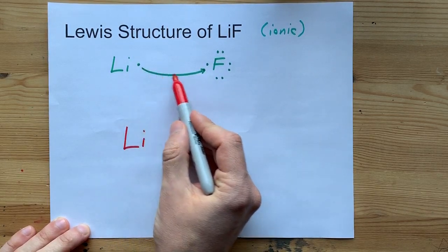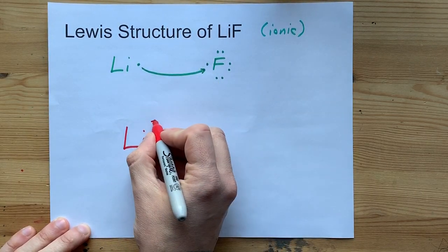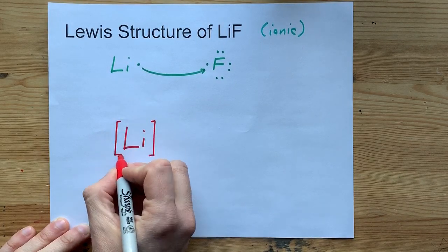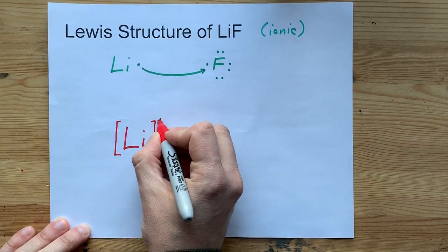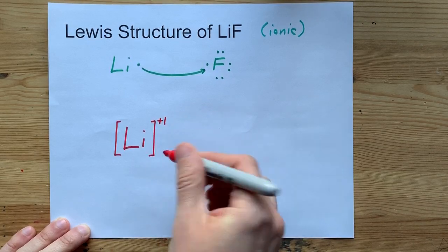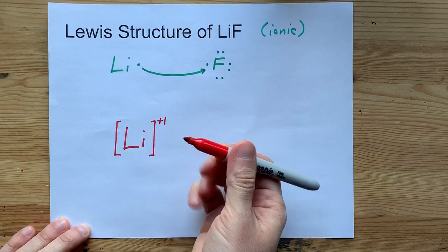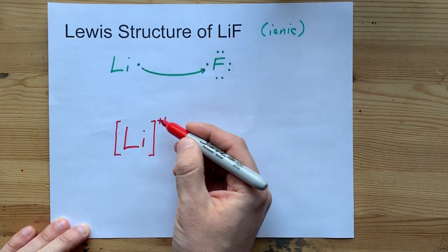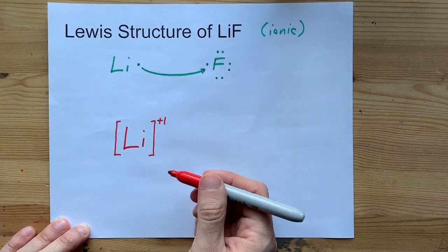Officially, because it gave away one electron, you have to put it in square brackets and put a plus one here. It could just be a plus - everyone knows that a single plus sign means plus one. But I'm going to be explicit and make sure everyone knows it's plus one.